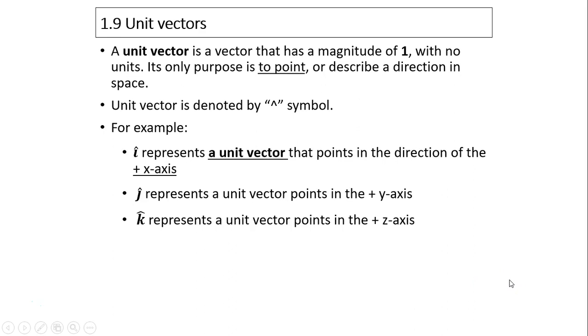A unit vector is a vector that has magnitude of 1 with no units. Its only purpose is to point or describe a direction in space. Unit vector is denoted by a caret symbol.